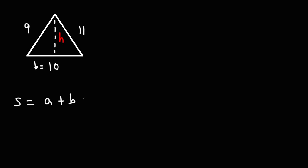S is basically A plus B plus C divided by 2, where A, B, and C are the three sides of the triangle. Since we have B set to 10, let's say that A is equal to 9 and C is 11.